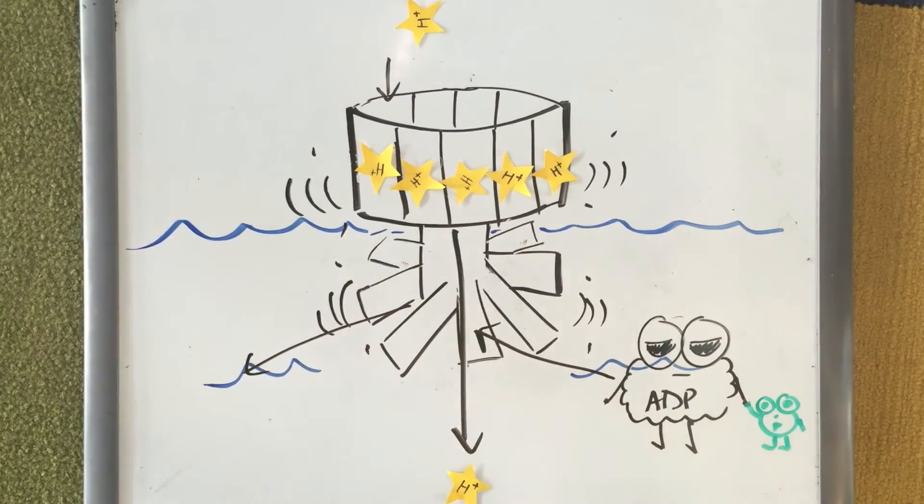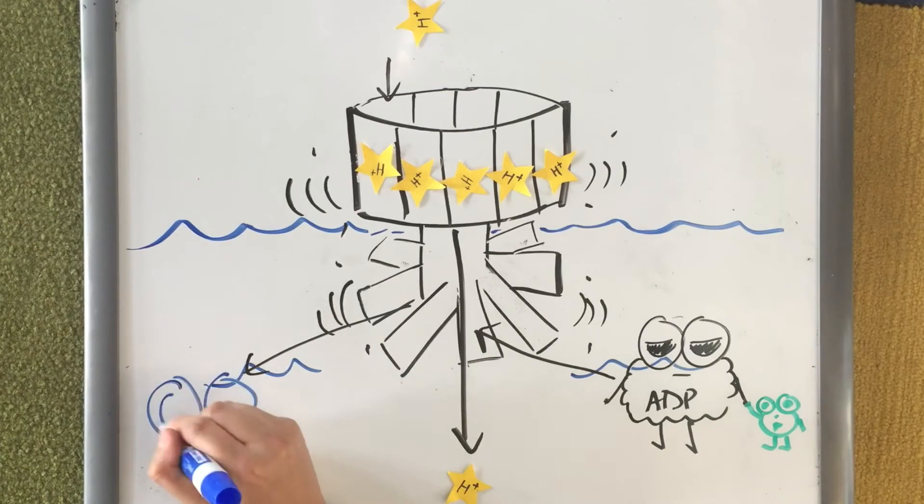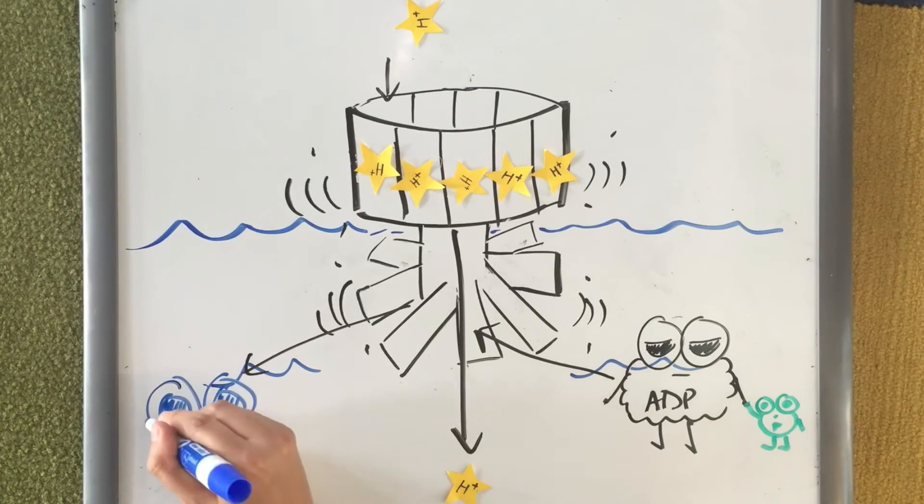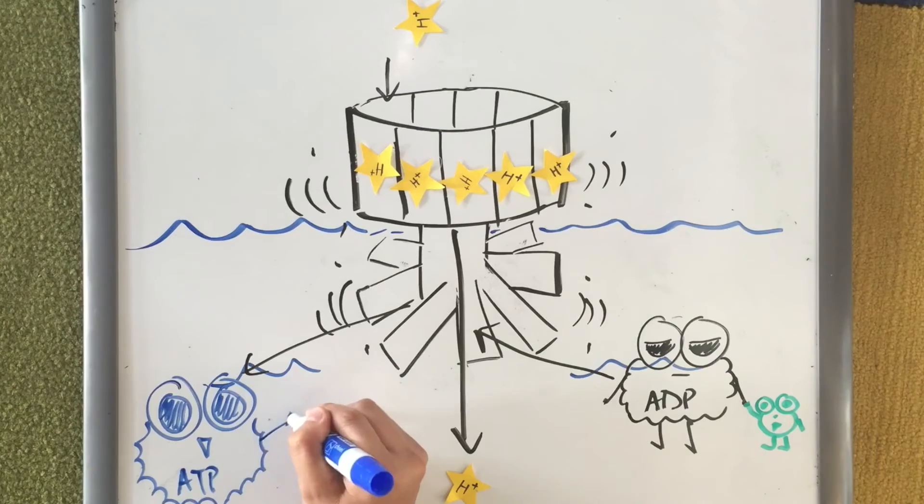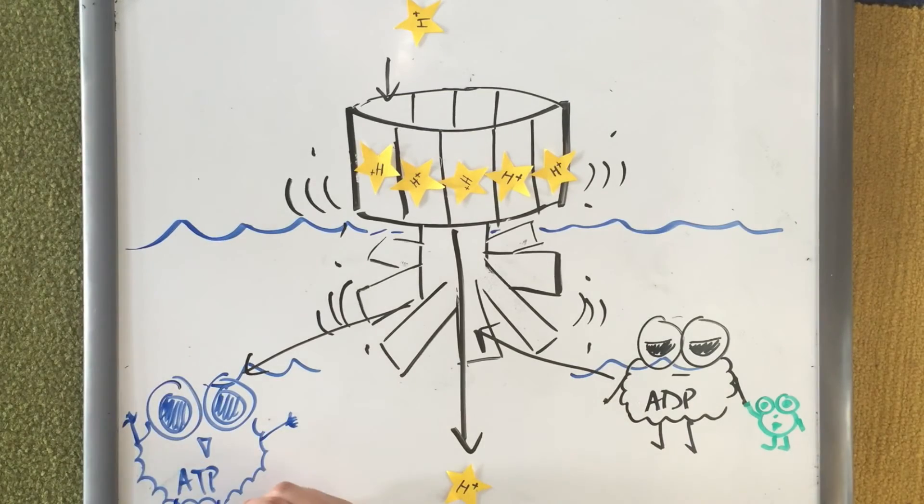The powered rotor is what allows ADP and inorganic phosphate to make ATP. The proton motive force is the movement of hydrogen ions, which ultimately powers ATP synthase, making ATP.